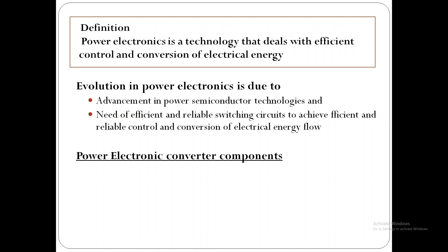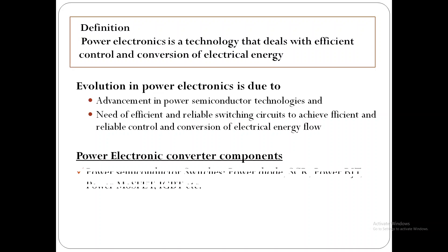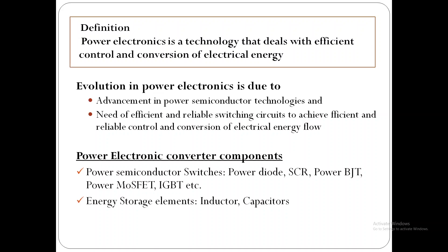Power electronics uses components such as power semiconductor switches — power diode, SCR, power BJT, power MOSFET, IGBT, and so on — as well as energy storage elements like inductors and capacitors. Resistors are not recommended in power electronic converter circuits. Other components such as transformers are also used, along with a control circuit. Since the components involved are associated with low power losses, power electronics converters are more efficient.